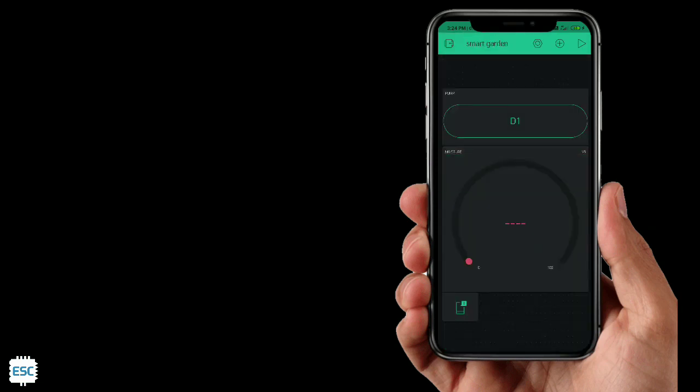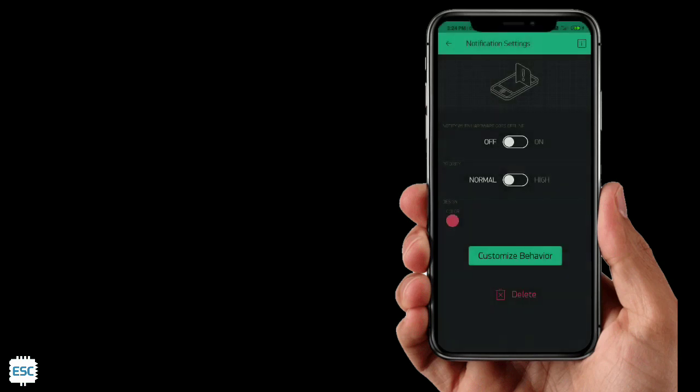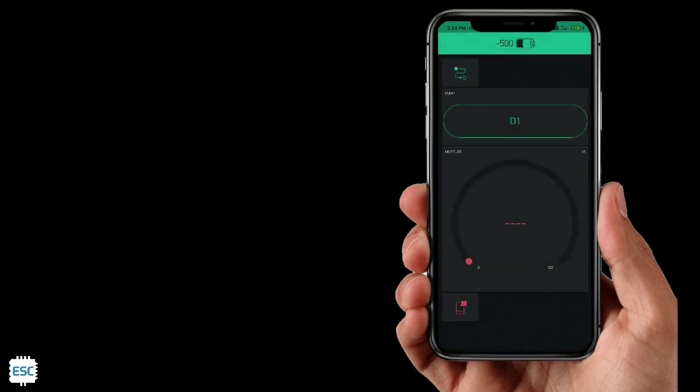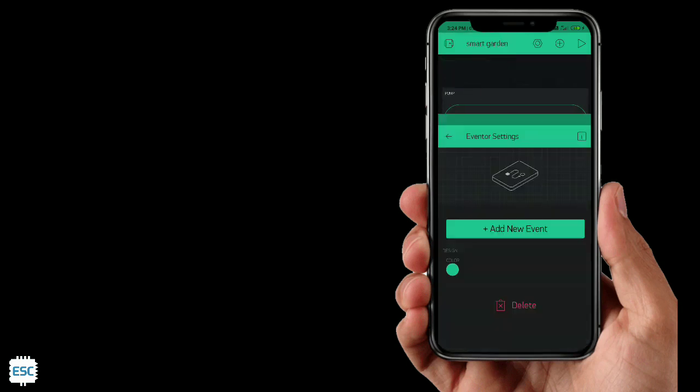To get the notification from the app we need to add the notification button and also add eventer button. After that, click on add a new event.